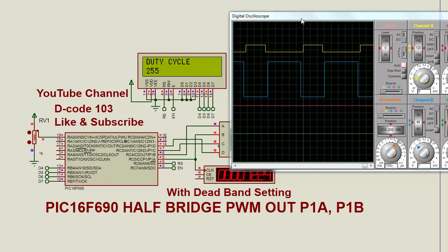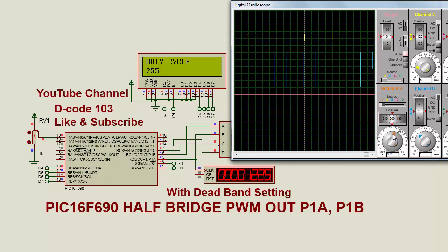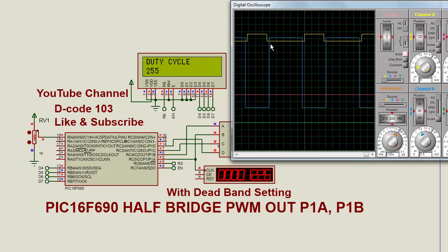Currently the duty cycle is 255. And this is the deadband — the deadband in the rising and falling of the PWM output.